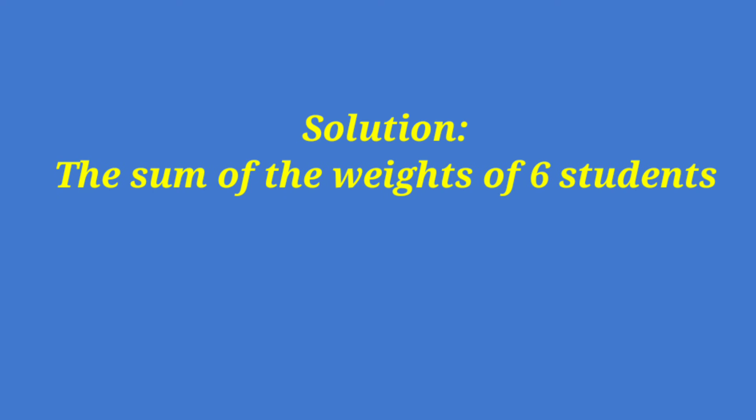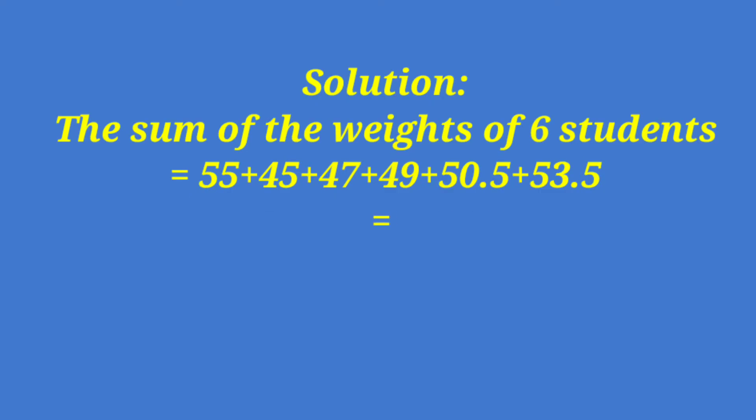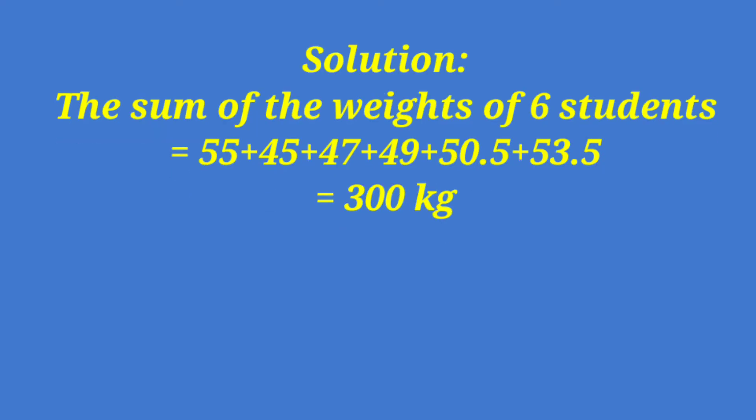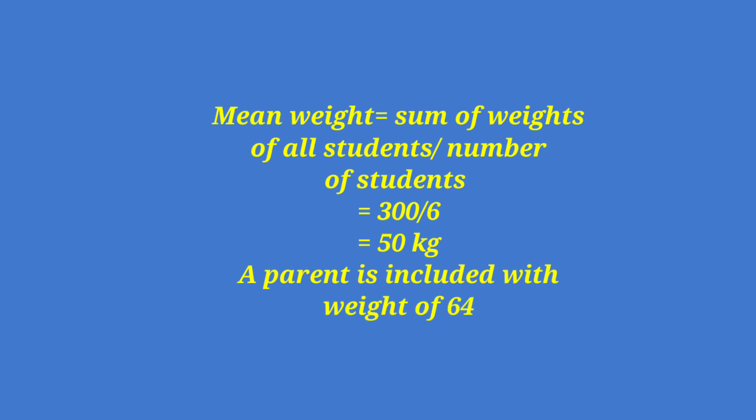Here is the solution. The sum of weights of six students is 55 plus 45 plus 47 plus 49 plus 50.5 plus 53.5. Remember that your knowledge of decimals is also being tested here. This is a very interesting sum in the sense that if you do not know about decimals, you won't be able to do anything. You have to learn decimals. I have an earlier video on the decimal chapter you can go through.